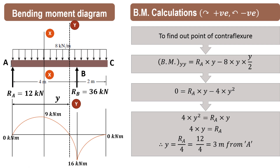In this way we can find the beam reactions, draw the shear force and bending moment diagrams, and find the point of zero shear as well as the point of contraflexure in case of a simply supported beam carrying uniformly distributed load over the entire span length and having an overhang on the right hand side. Thank you very much for watching.